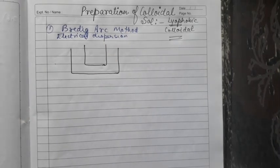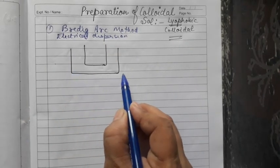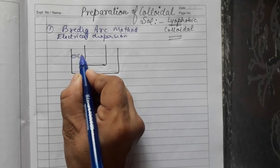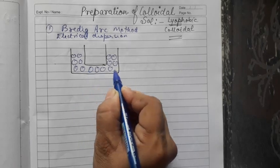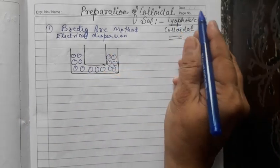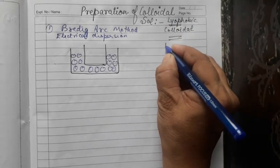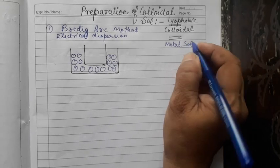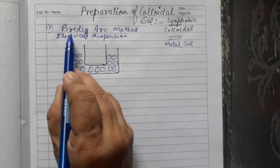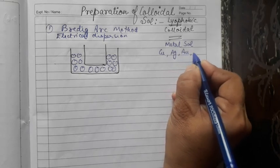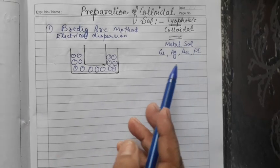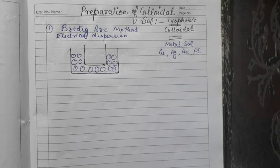In this electrical dispersion method, there is one outer container with ice cubes — you have to keep it cool. The examples of lyophobic colloidal sols are metal sols: copper, silver, gold, platinum. These sols we can prepare. You cannot normally imagine dissolving these metals in water, but now we can prepare them using the Bredig's arc method, also called the electrical dispersion method.